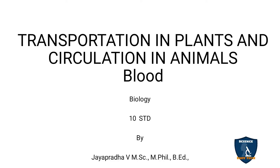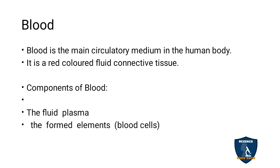In this video, we are going to discuss about the blood, the transportation in plants and circulation in animals. The blood is the circulatory medium in the human body and it connects the other parts. It is flowing throughout the body and it connects other tissues also. The blood is connected with all the tissues, so it is called connective tissue, and the color of the blood is red.